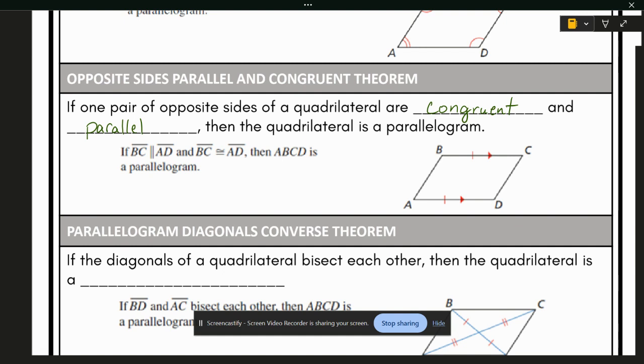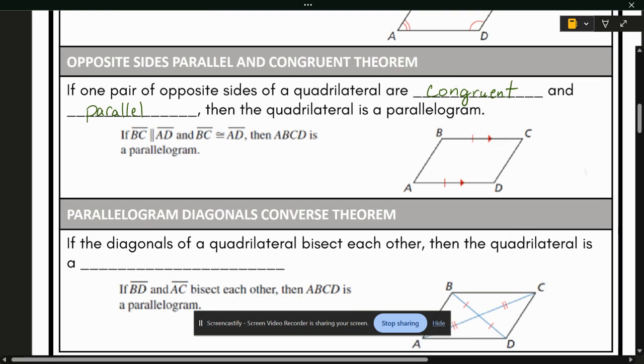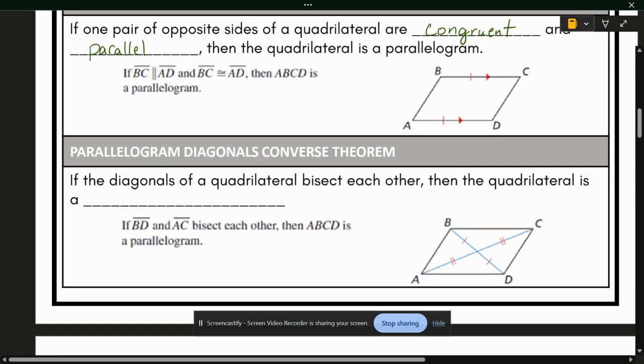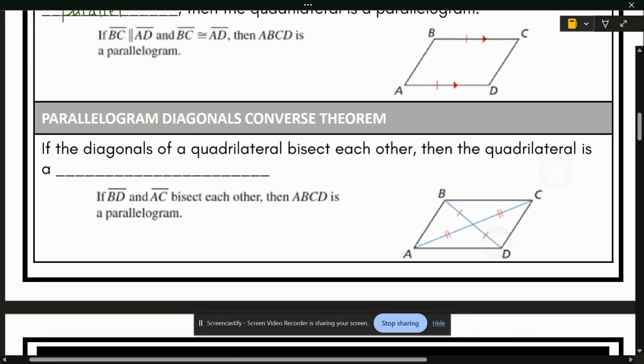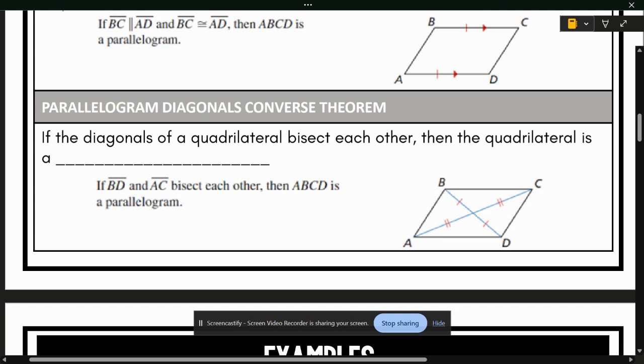You can't just say that one side is parallel, the other side is congruent, so it's a parallelogram. It has to be both the same side, the same two sides are congruent and parallel. And then our last part. If the diagonals of a quadrilateral bisect each other, there's that word where you cut to two equal halves, then the quadrilateral is a parallelogram.